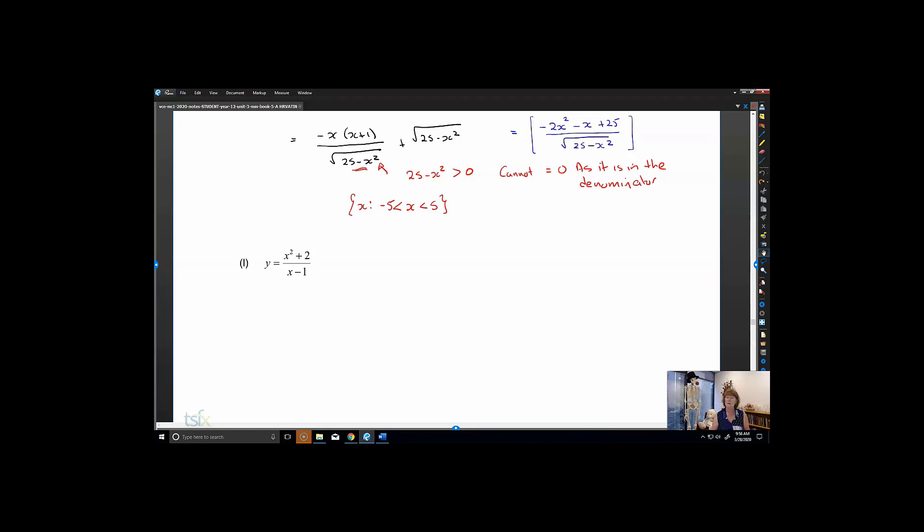We identified a product rule when we're multiplying two functions together and we can't expand or simplify, and then we talked about the quotient rule when we're dividing one function by another. The very first step is to make sure that we try and simplify the expression or equation that we have, and then apply the necessary rule.